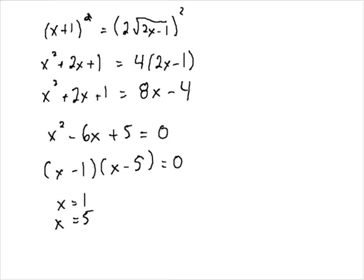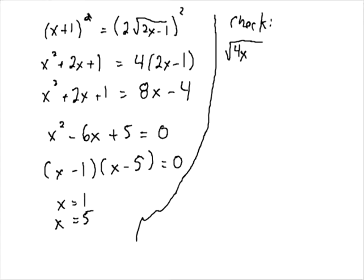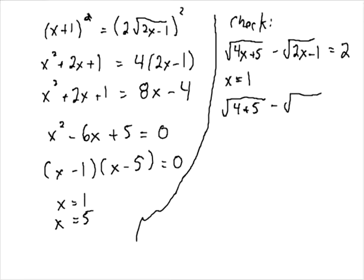Now remember, because we're dealing with radicals, we always have to check our solutions. The original equation is: square root of 4x plus 5 minus square root of 2x minus 1 equals 2. Let's check x equals 1. We put 1 in for every x: square root of 4 plus 5 minus square root of 2 minus 1 — does that equal 2? This becomes square root of 9 minus square root of 1. Is 3 minus 1 equal to 2? It definitely is. So x equals 1 is a solution.